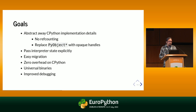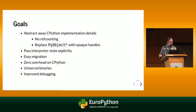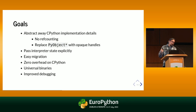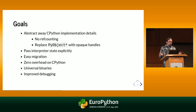We agreed on this set of goals: get rid of reference counting, and also make sure there is no implicit state — make the global state explicit. At the same time, we want to make the transition as easy as it can possibly be, so the new API must not have any overhead on CPython. We also want to provide new possibilities, such as universal binaries — you compile your extension once and it works on all interpreters and all versions. And we have tools to help write extensions with HPy.